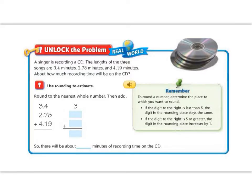Let's begin with the unlock the problem. It says a singer is recording a CD. The lengths of the three songs are 3.4 minutes, 2.78 minutes, and 4.19 minutes. About how much recording time will be on the CD.